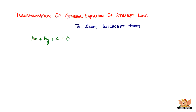So if this is the general equation of the straight line, we need to convert or transform this general equation to the various forms of a straight line. There is slope-intercept form, there is two-point form, there is point-slope form, and so on. In this video, we will see how to convert ax plus by plus c equal to 0 to the slope-intercept form.